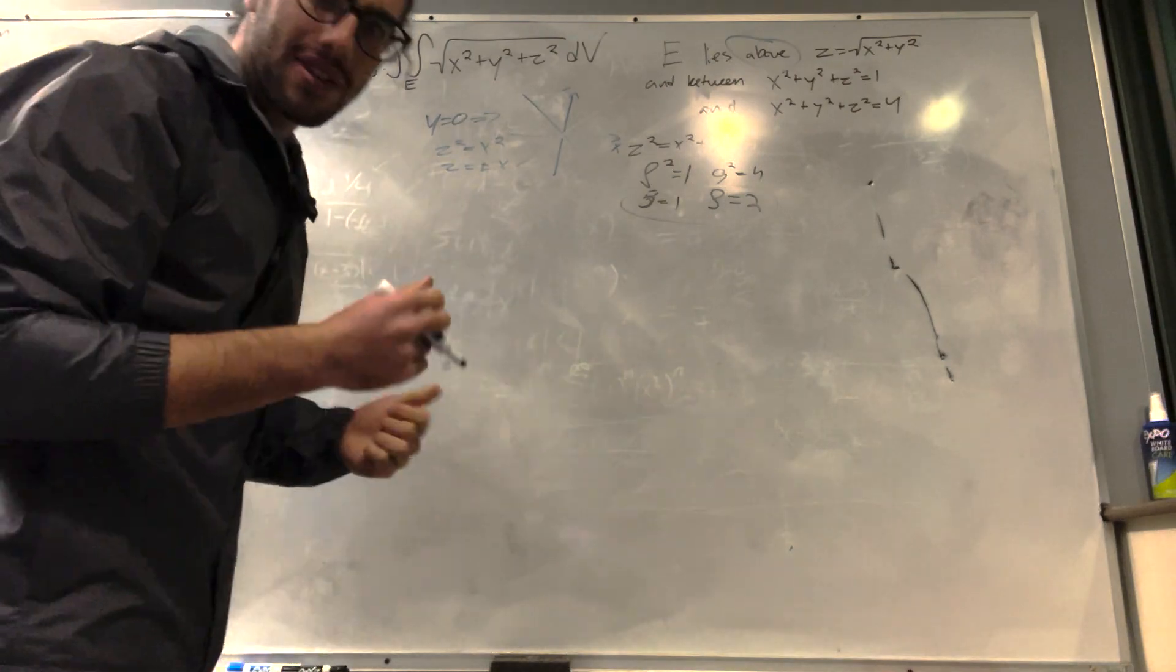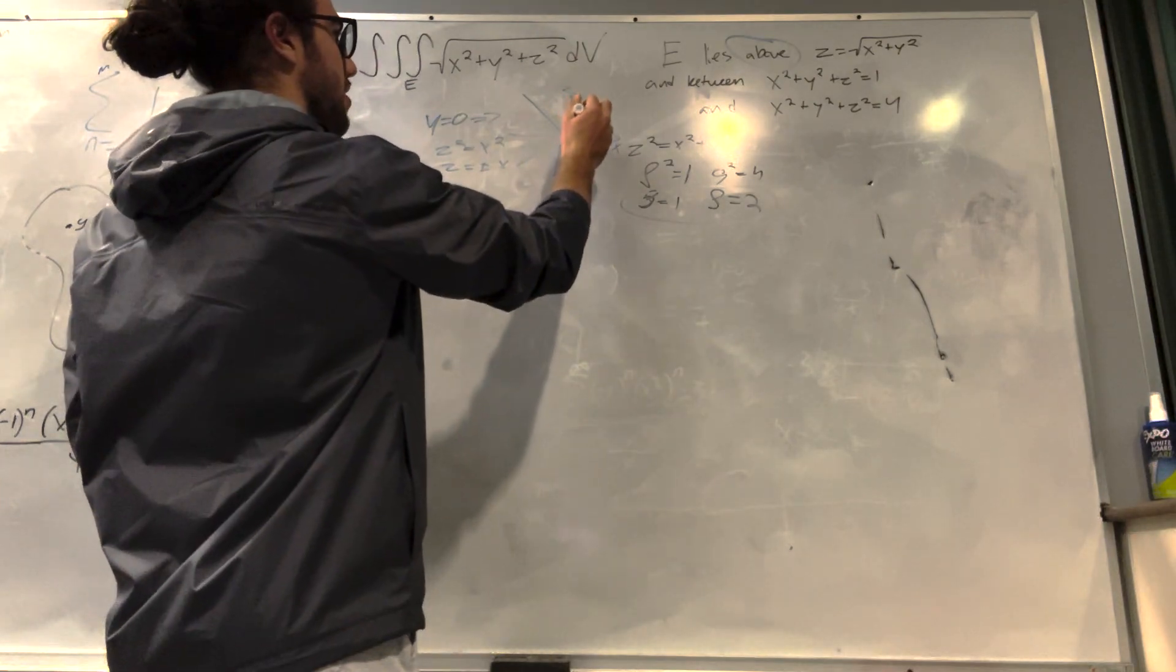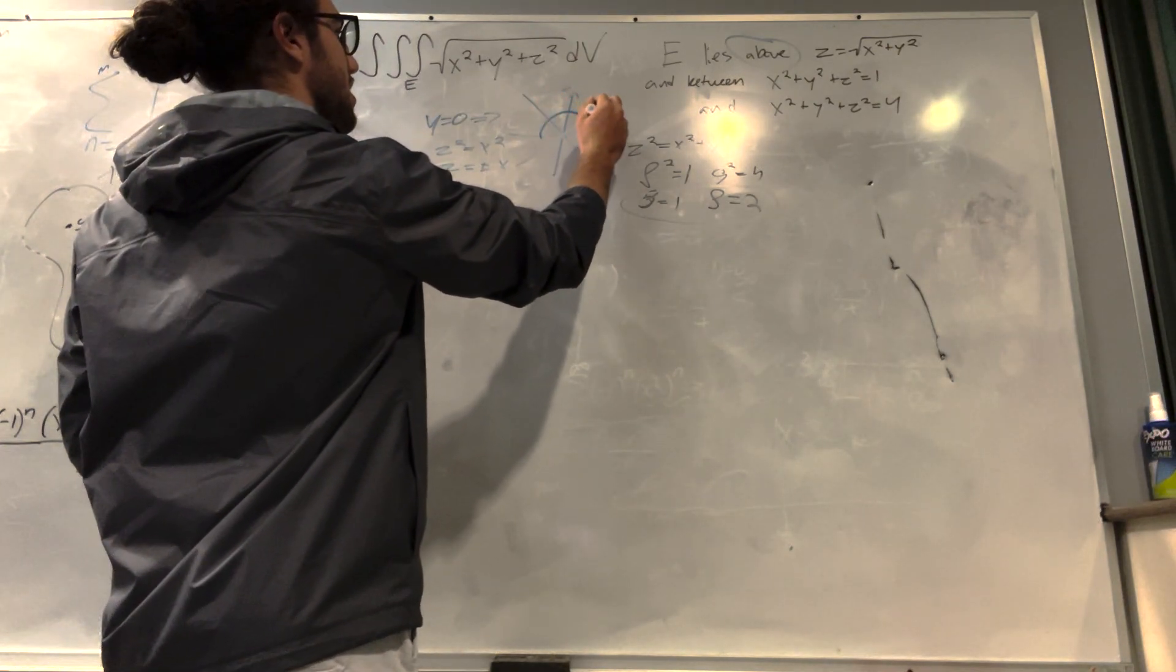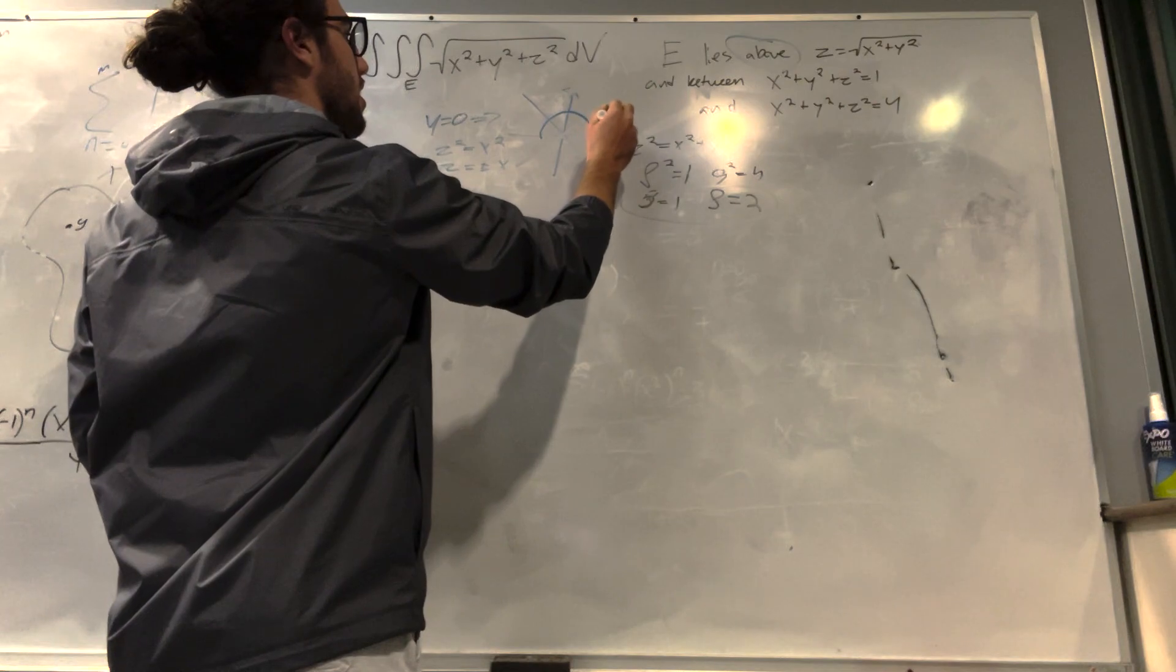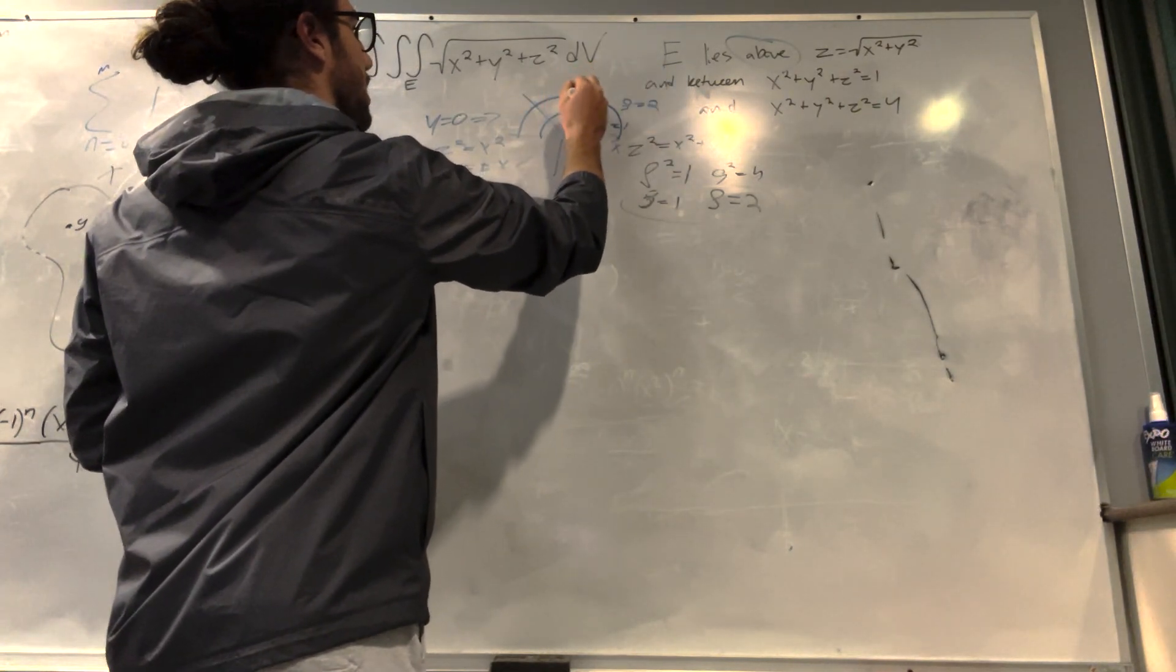So what is rho? Well, rho is kind of like radius, but in the third dimension. So you can kind of think of it when you're flat, rho is just going to be equal to radius. So this is equal to 1, and this is rho is equal to 2. We're going to be integrating this area.